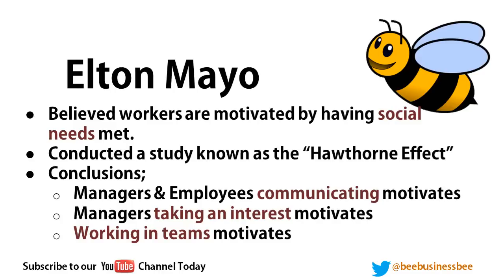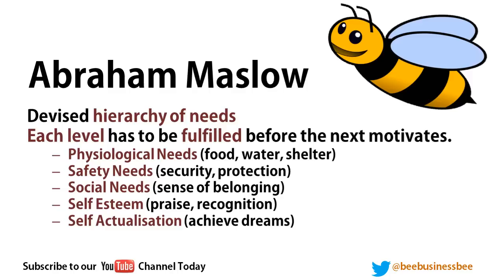Abraham Maslow devised a hierarchy of needs, combining elements of Taylor and Mayo. Each level must be fulfilled before the next motivates. Starting with physiological needs — food, water, shelter, heating — then safety and job security, then social needs and feeling part of a team, then self-esteem and recognition, and finally self-actualisation: achieving your dreams and goals within the organisation.